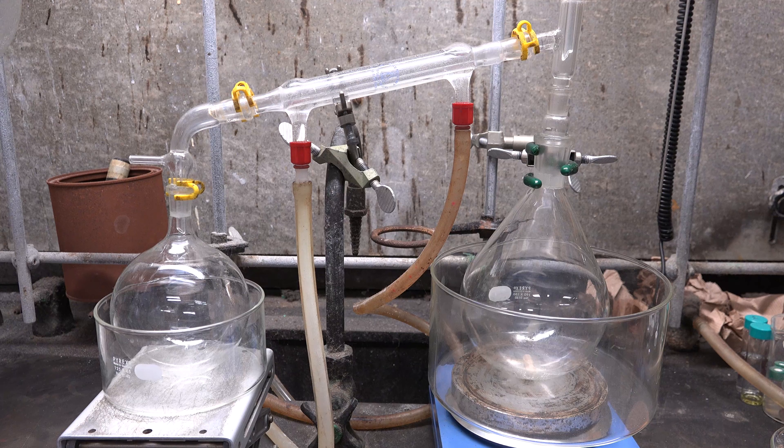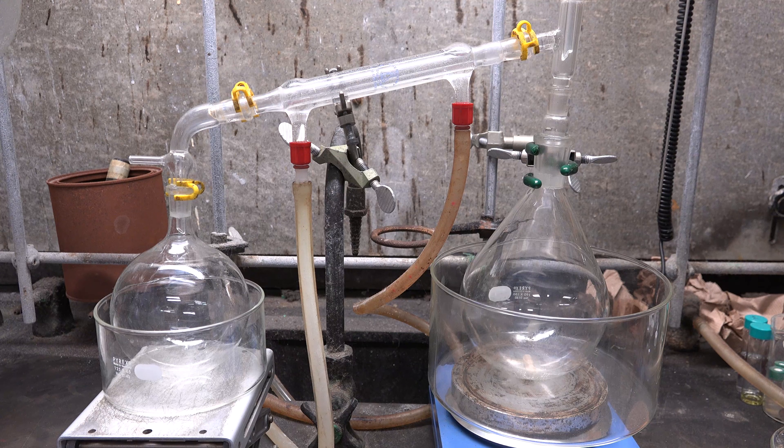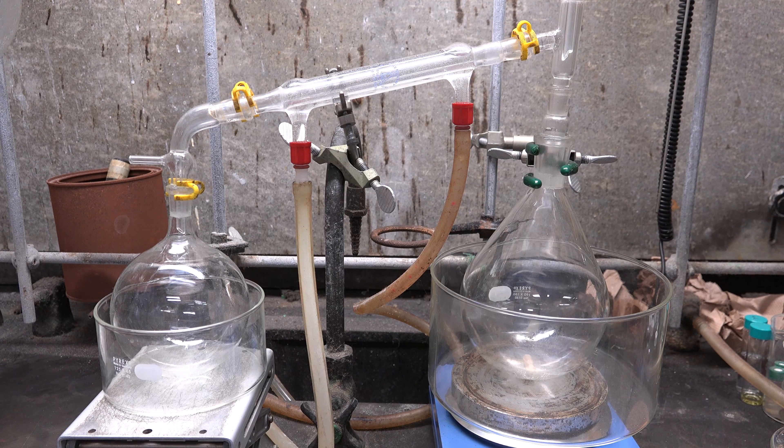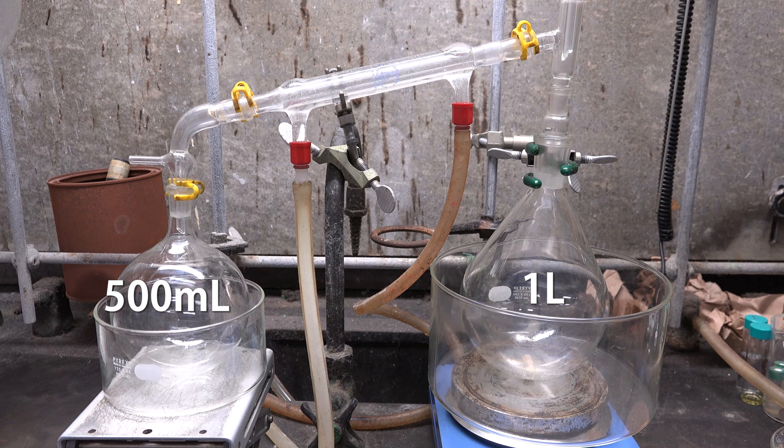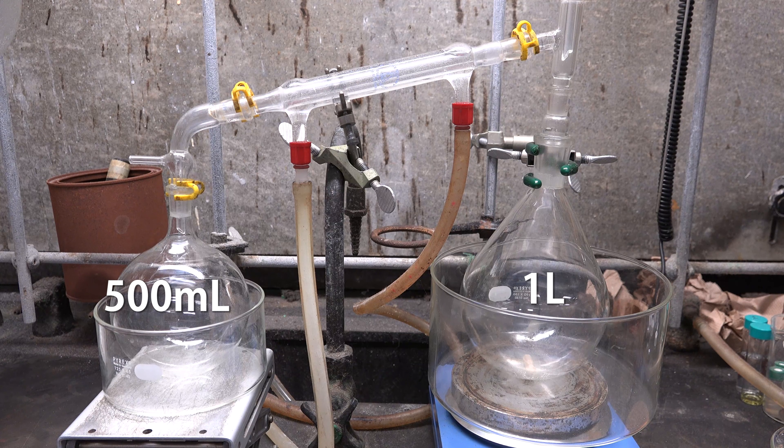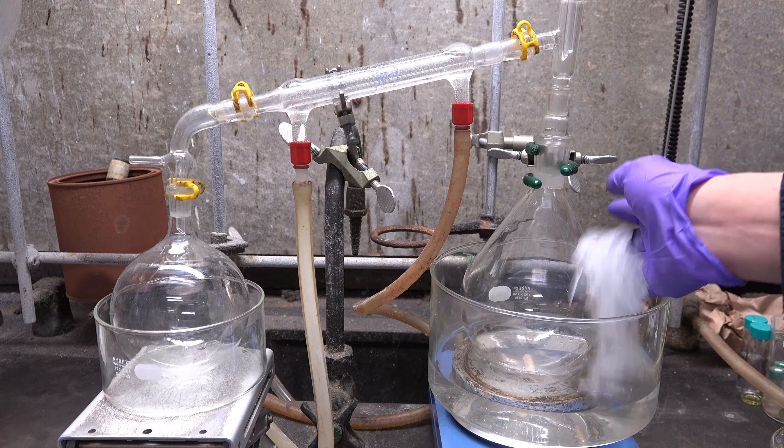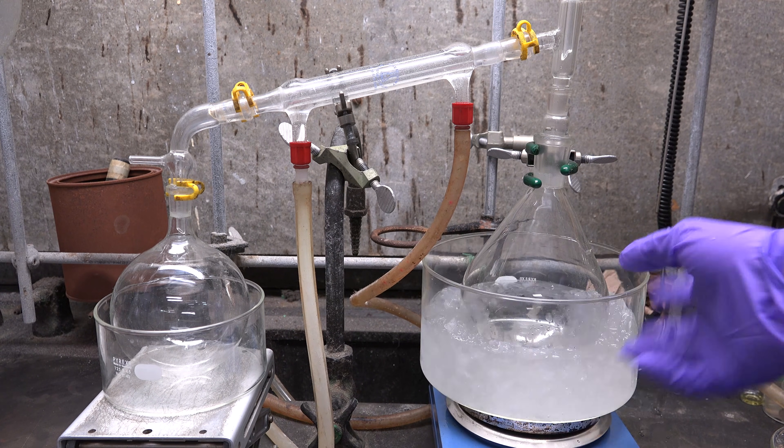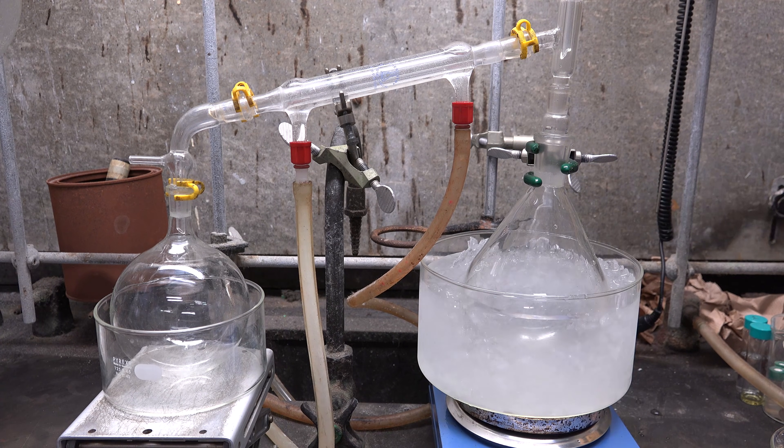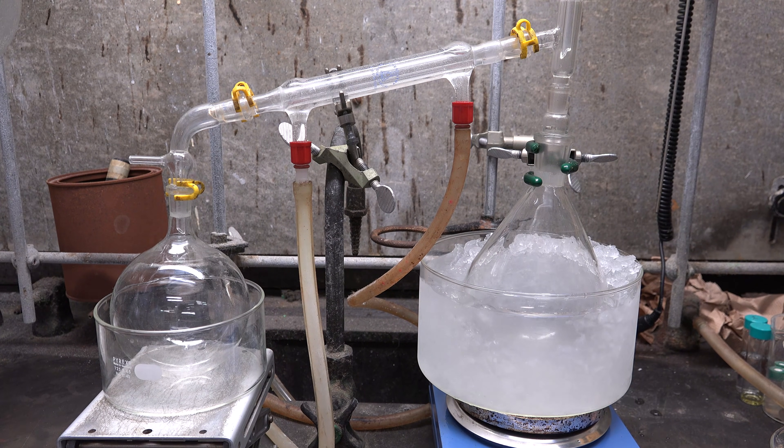First we set up a distillation apparatus since we'll be distilling the products later. The boiling flask is 1 liter in size while the receiving flask is 500 mL in size. Now we pack the boiling flask in ice water for now since the bromoethane we produce is volatile and we don't want it to boil out until ready.